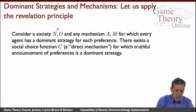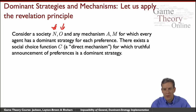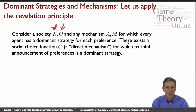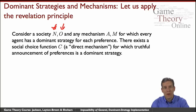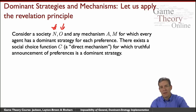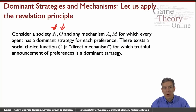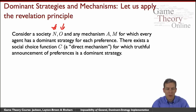We've got our society with N individuals and a finite set of outcomes O. If we want to design mechanisms where every agent has a dominant strategy for each preference, we can invoke the revelation principle. The revelation principle tells us that if we have an indirect mechanism with dominant strategies, we can collapse that into a direct mechanism — a social choice function — where people just tell us their preferences directly, making truth a dominant strategy. So without loss of generality, we can look at social choice functions directly.